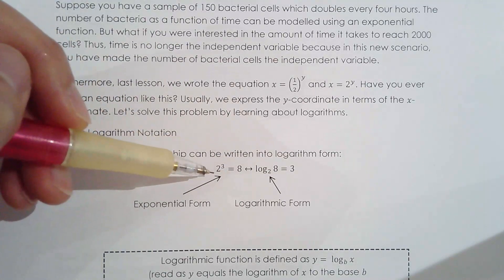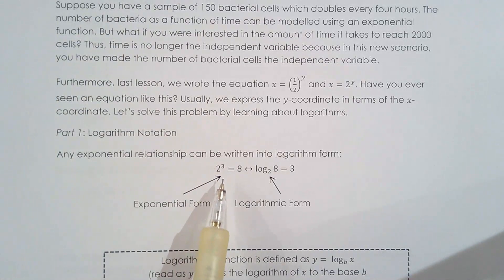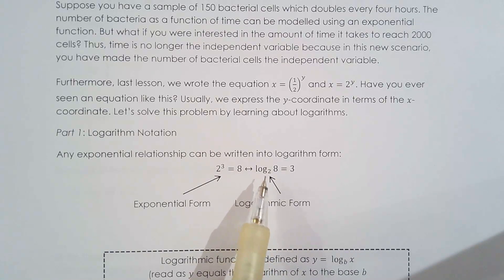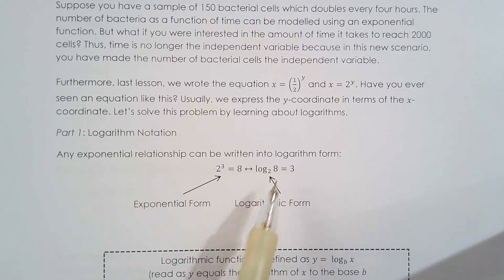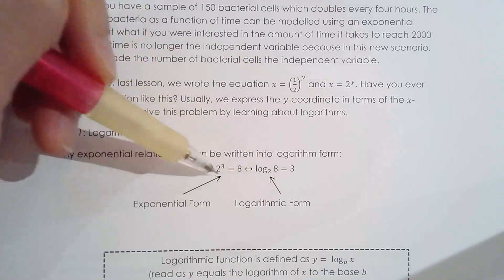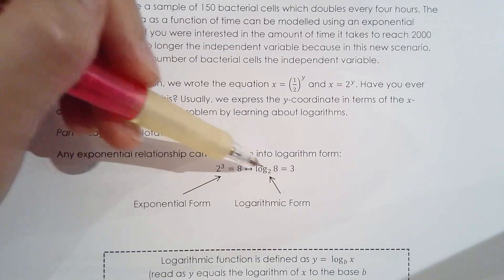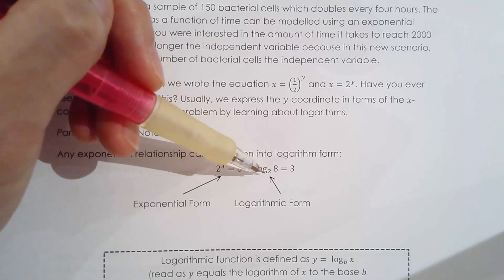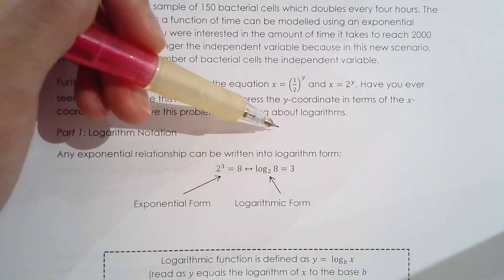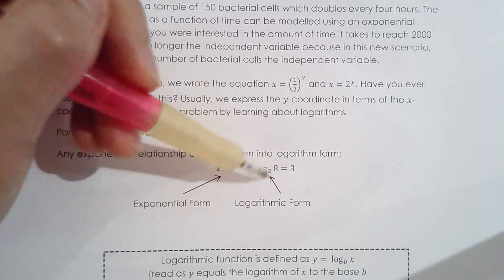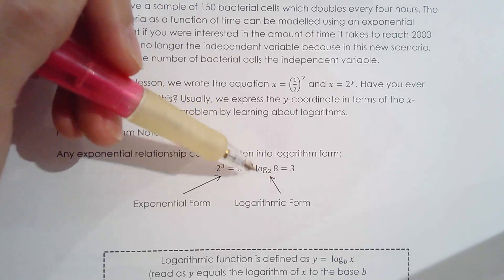What we're going to do is convert from exponential form to logarithmic form. In logarithmic form, we have log base 2 of 8. The 2 is the base of the logarithm, and the 8 is the argument of the logarithm. When we talk about powers, you have base and exponent; when we talk about the logarithm, we have base and argument. When I write log base 2 of 8, I'm asking: 2 raised to the power of what number equals 8? The answer is 3, so log base 2 of 8 equals 3. Whenever you see a logarithm, you're thinking exponent.